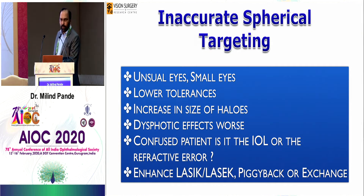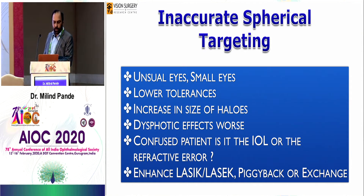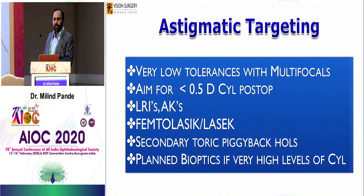Spherical targeting is a very common issue if your biometry systems are not up to date. This happens for small eyes and lower tolerances. All presbyopia lenses have lower tolerances for defocus errors, and any defocus will make the glare and halos worse. Patients then become confused — is it the lens or is it the refractive error? These can be enhanced quite easily.